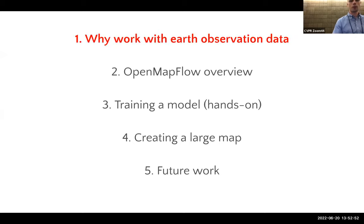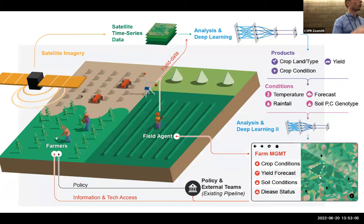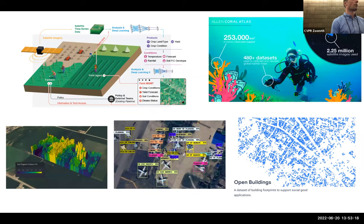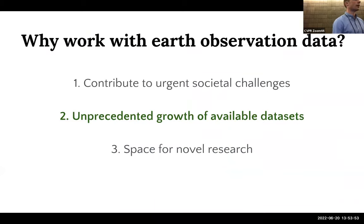Why work with Earth observation data? There are three key reasons. First, the ability to contribute to urgent societal challenges. We've talked a lot about food security and the process of taking satellite imagery and extracting insights related to what's growing where and what sort of yield you might have. But this is just one of many potential urgent societal challenges that can be addressed using remote sensing data — including mapping coral reefs, Google's Open Buildings project for humanitarian efforts, and more.